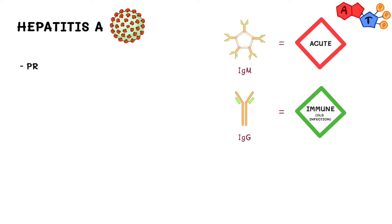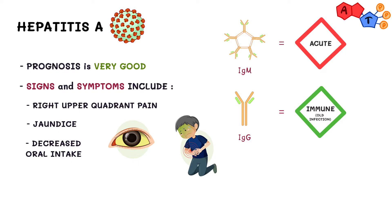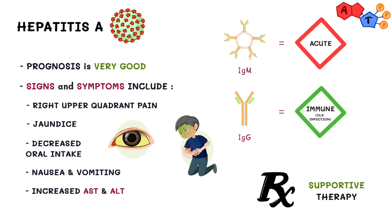The prognosis is very good and most patients recover. In acute liver inflammation or infection, signs and symptoms include right upper quadrant pain, jaundice, decreased oral intake accompanied by nausea and vomiting, and sometimes dehydration — in addition to increases in AST and ALT, which are liver enzymes and markers of inflammation. These are not specific for hepatitis A; the serology is what's specific. Regarding treatment, it's mainly supportive therapy.